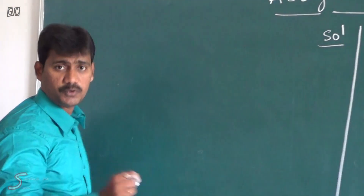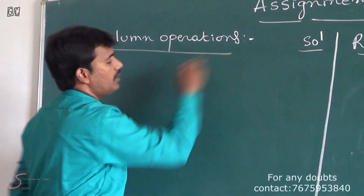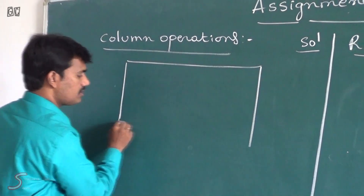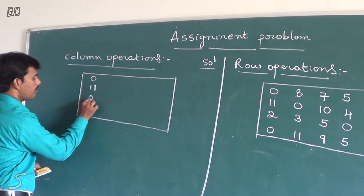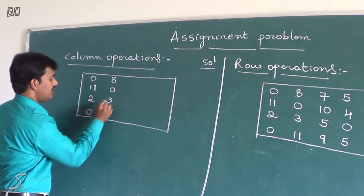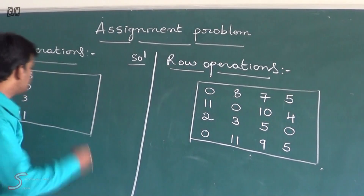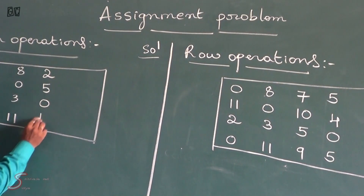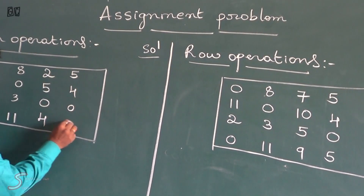Now we apply Step 2, the column operation: take the minimum element from each column and subtract from the remaining. In the first column the minimum is already 0, so no changes: 0, 11, 2, 0. In the second column the minimum is 0, so no changes: 8, 0, 3, 11. In the third column the minimum is 5: 7 minus 5 is 2, 10 minus 5 is 5, 9 minus 5 is 4. In the fourth column the minimum is 0, so: 5, 4, 0, 5. Step 2 is complete.